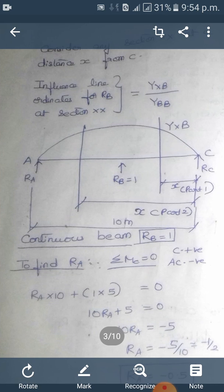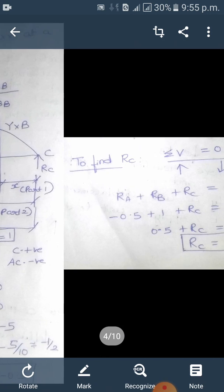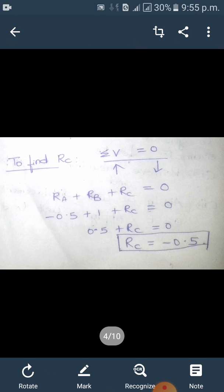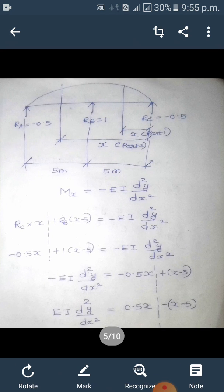RB equals 1. To find RA, let us take the moment of all forces about C - clockwise positive, anti-clockwise negative. So it will be RA into 10 plus 1 into 5 meters, giving RA equal to minus 1/2 or minus 0.5. Then to find RC we apply summation of vertical forces equals 0, upward equal to downward. So RC is also equal to minus 0.5.